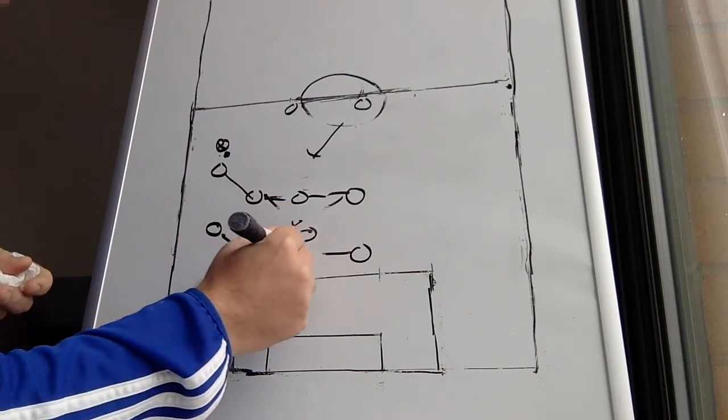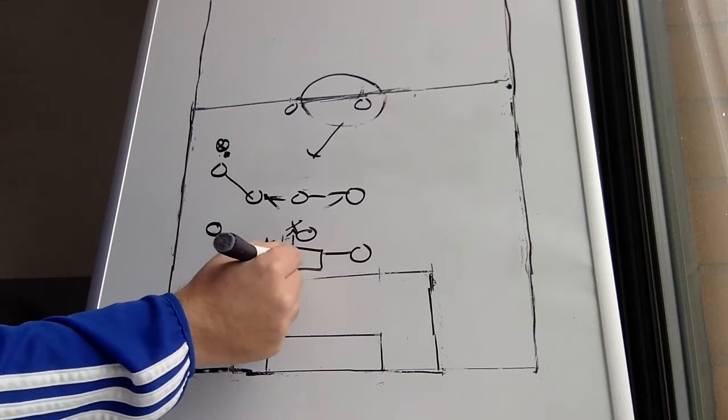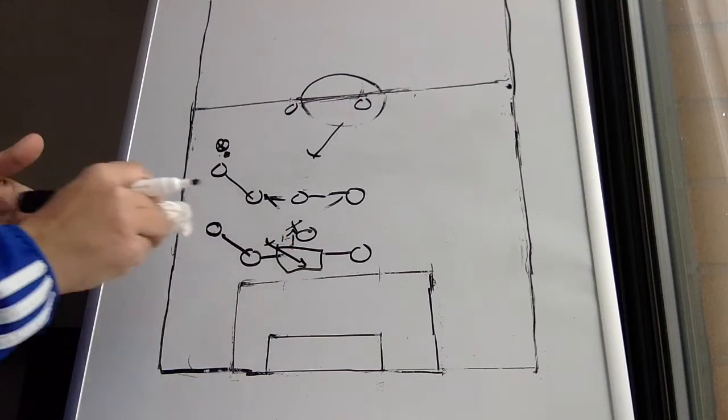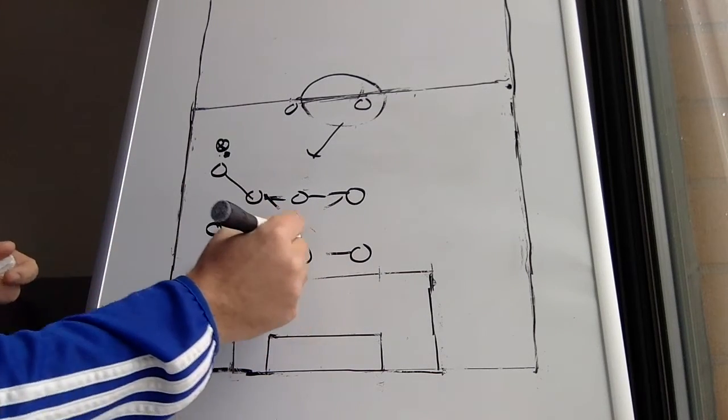If the center back steps up, it leaves space to be exploited. And the other striker can make the run, he'd still be on sides. So you do not want to have the center back being pulled out of position in between the lines.